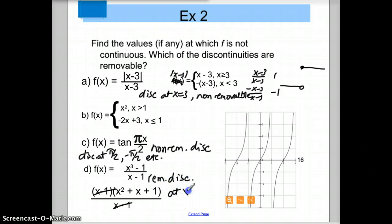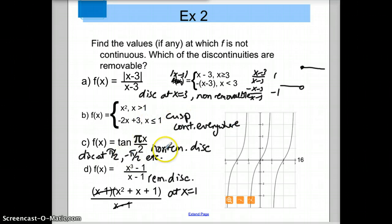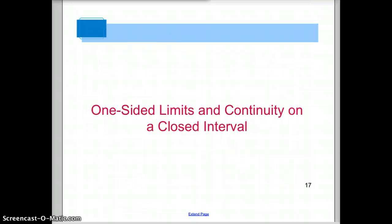The removable discontinuity for x³ - 1 over x - 1 is at x = 1 — a hole in the graph. So to summarize: the absolute value example has a jump, non-removable; the piecewise with matching pieces has a cusp and is continuous everywhere with no discontinuity; tangent has non-removable discontinuities at many points; and x³ - 1 over x - 1 has one removable discontinuity at x = 1. The next video will start with one-sided limits and continuity on a closed interval.